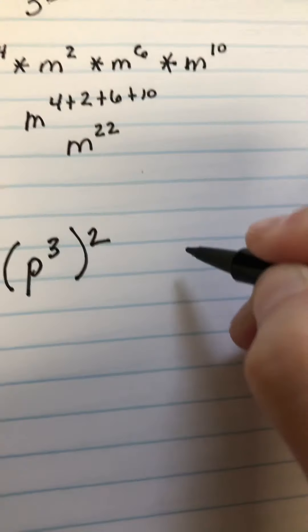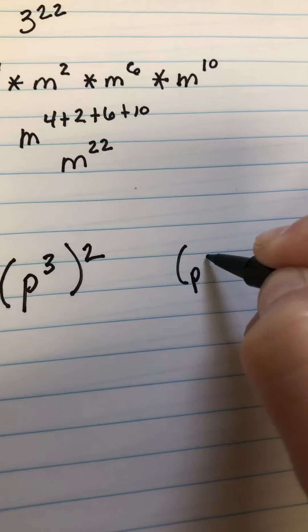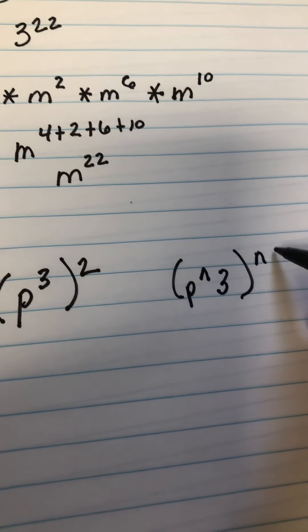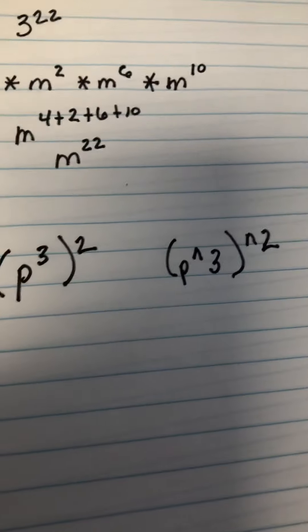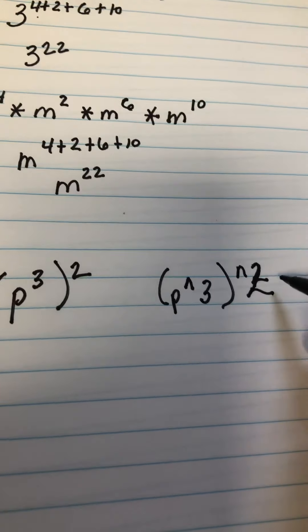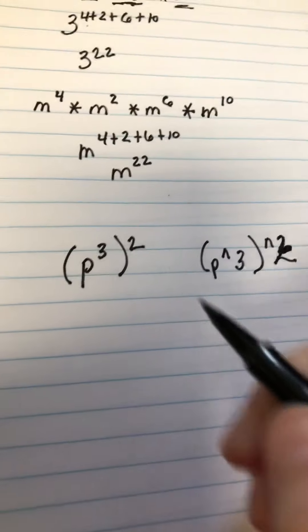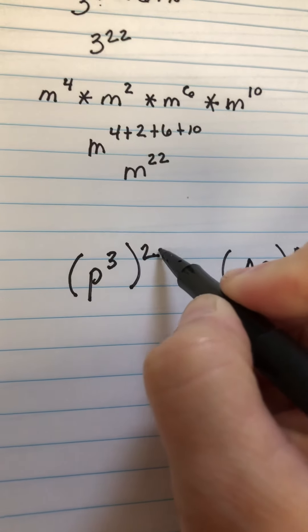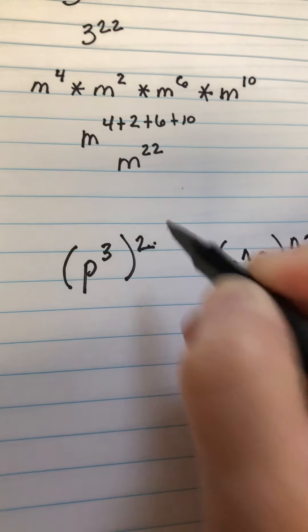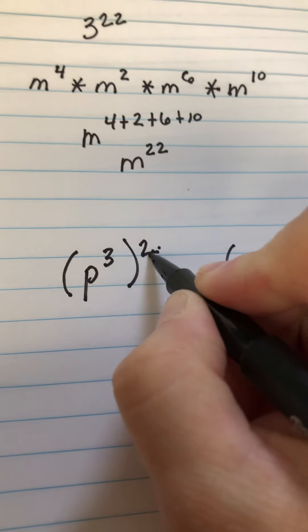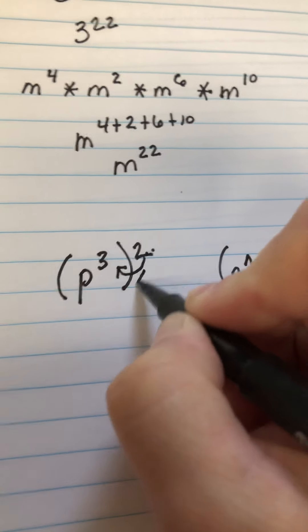In the computer, it would look like this. That 2 would probably be bigger. Okay. So, what that means is we're literally multiplying P to the 3rd by the 2nd. So, instead of adding, because it's raised to an exponent, we now multiply.